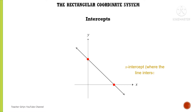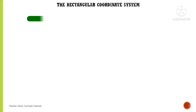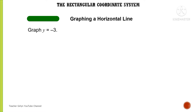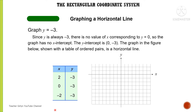Intercepts: the X-intercept is where the line intersects the X-Axis. In other words, intercepts are the points that touch the Y-Axis or X-Axis. For instance, graph Y is equal to negative 3. Since Y is always negative 3, there is no value of X corresponding to Y equal to 0, so the graph has no X-intercept.